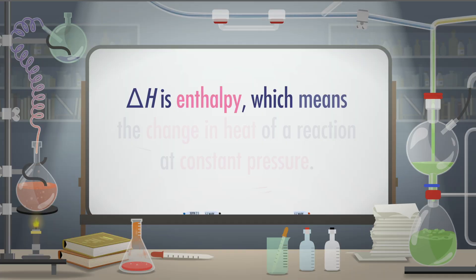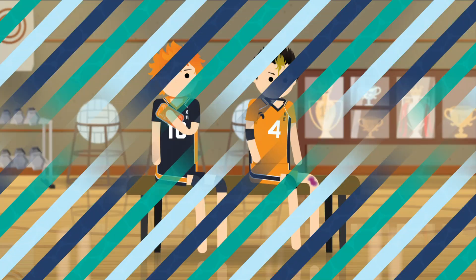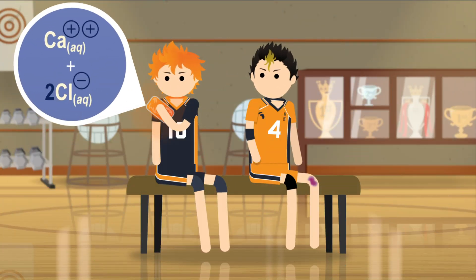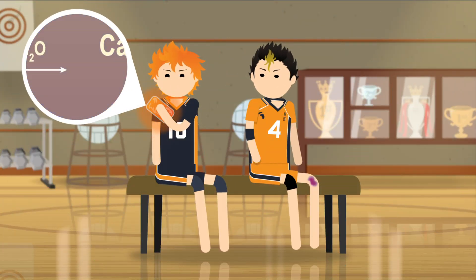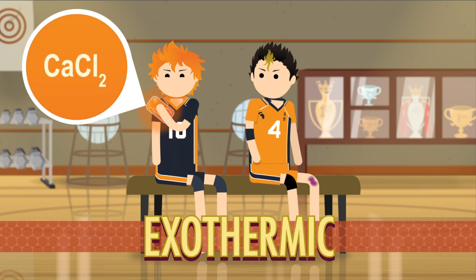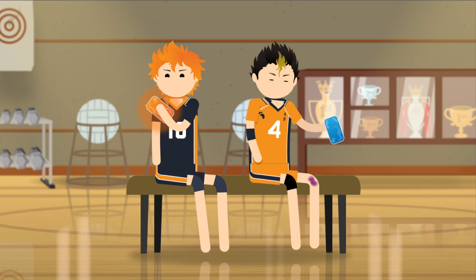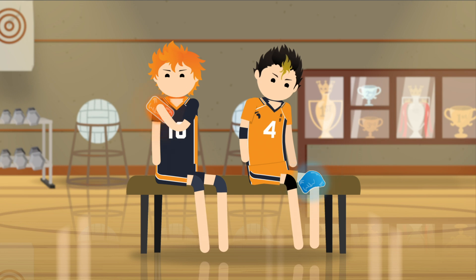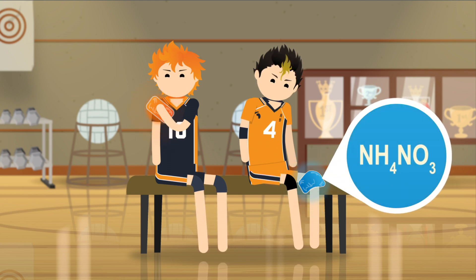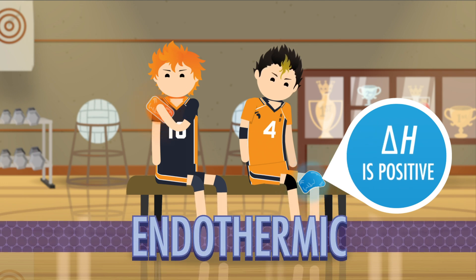First, delta H is enthalpy, which means the change in heat of a reaction at constant pressure. A good way to understand enthalpy is with chemical hot and cold packs that you might use for an injury. A hot pack gets hot because the products of the reaction — the dissolved salt ions in solution — have lower energy than the reactants, the undissolved salt. This is called an exothermic process because heat is given off by the reaction, warming the pack, and the sign of delta H is negative. A cold pack pulls in heat, usually from our bruised knee, so it feels cold to the touch. The products have higher energy than the reactants. This is called an endothermic process because heat moves into the pack, and the sign of delta H is positive.